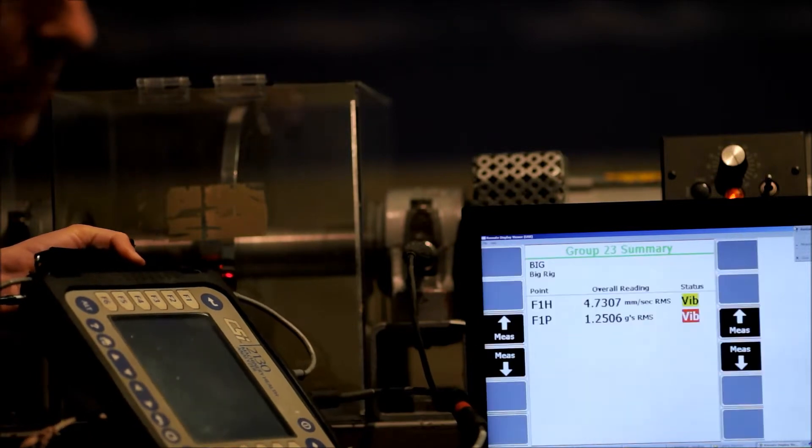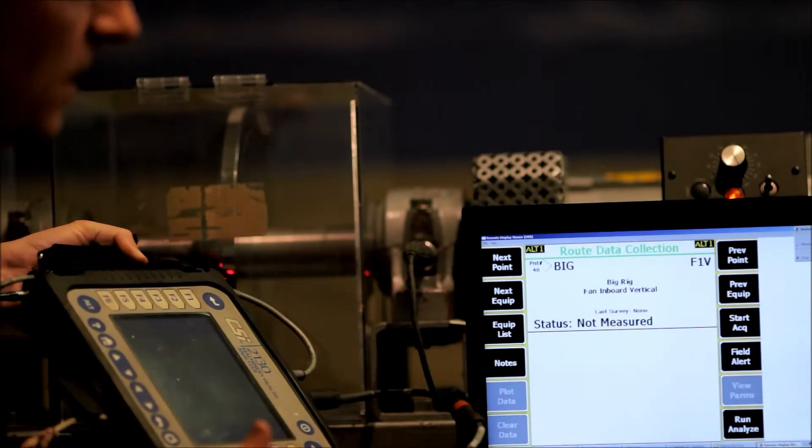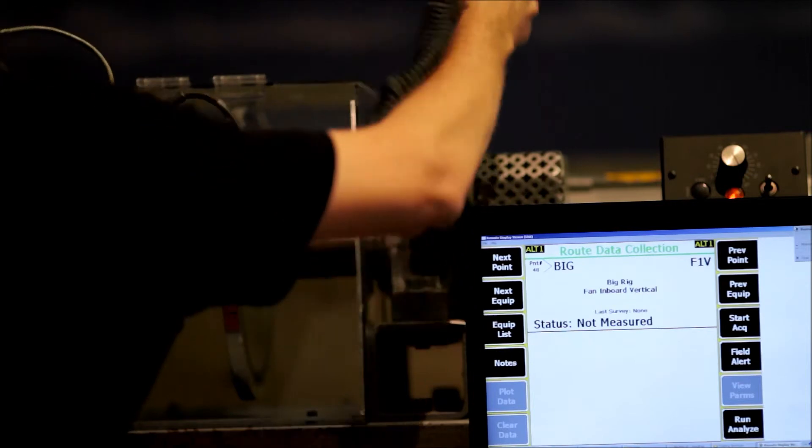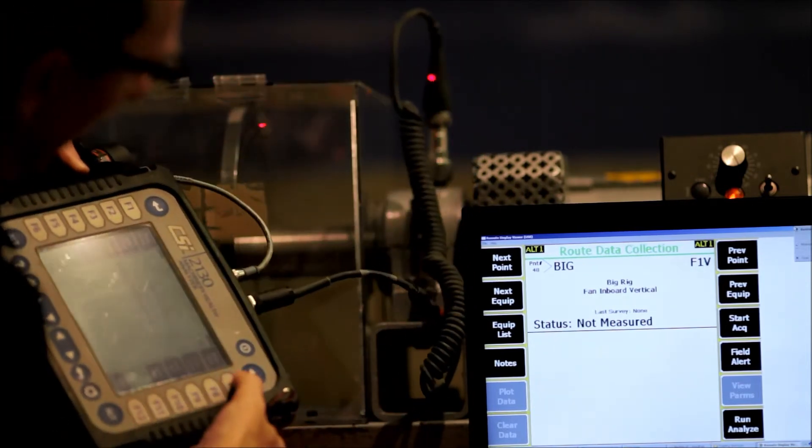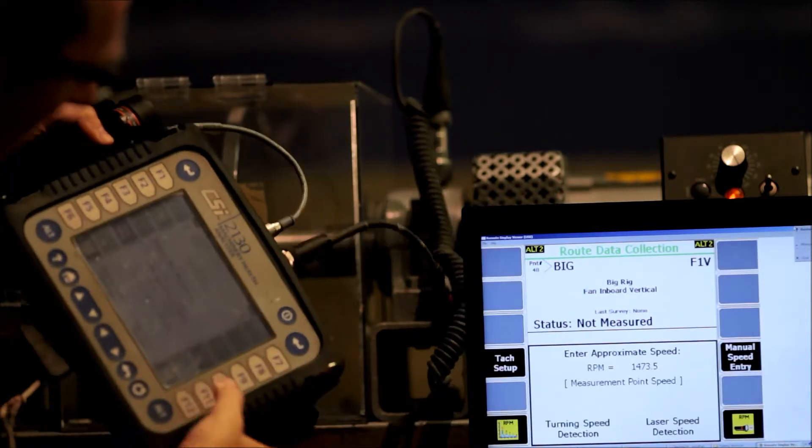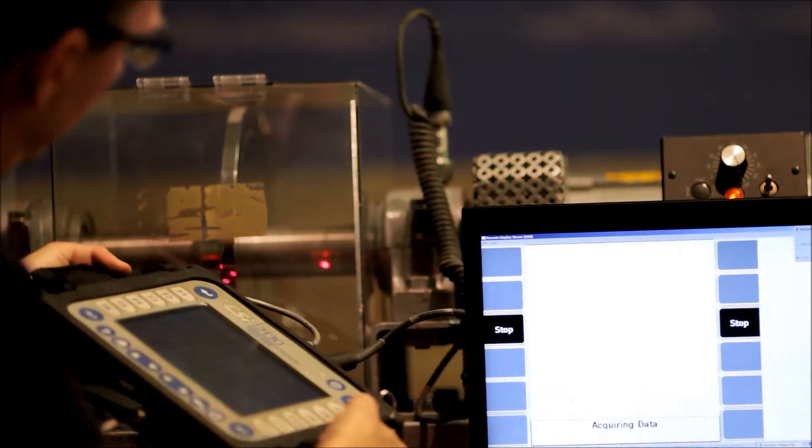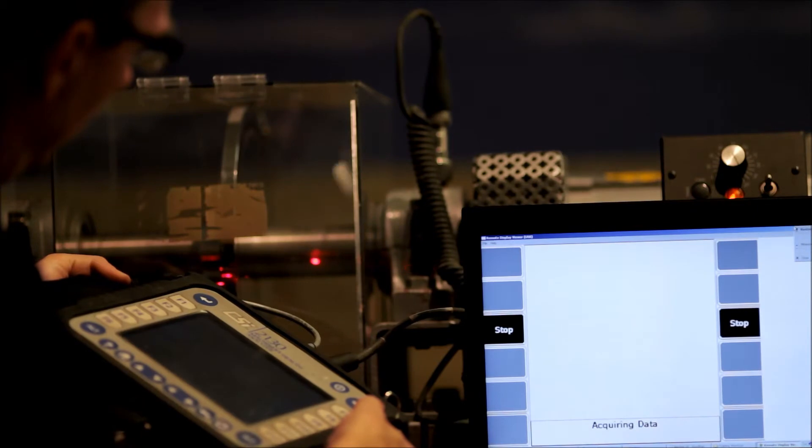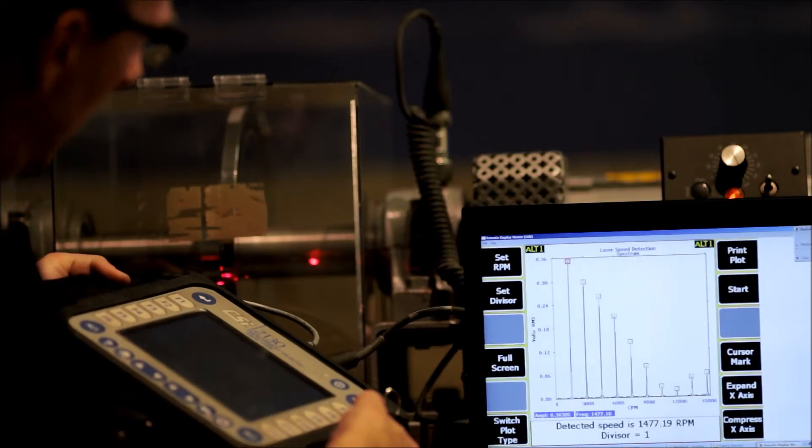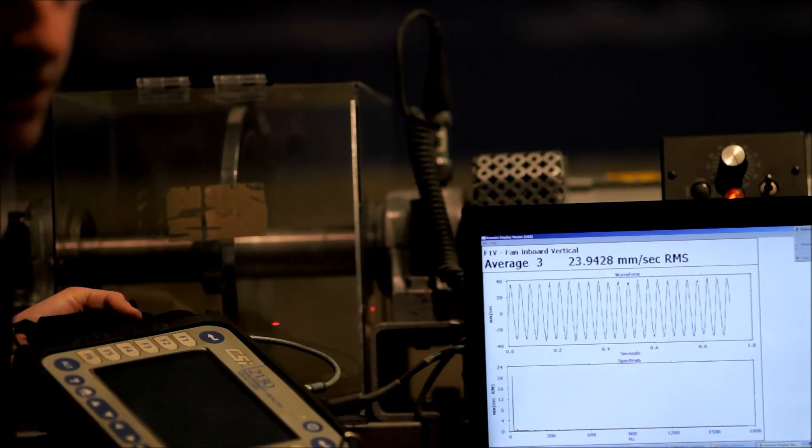So that's quite simple. Let me do that one more time without explanation to show you how quick it really is. So here I am, let's say I move to F1B. I'm going to choose new RPM, laser speed detection, approximate speed range, hit enter. There's my speed, hit enter, enter, and away I go collecting data with the correct speed. So that's all there is to it.